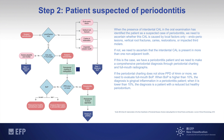If the periodontal charting does not show probing pocket depth of four millimeters or more, we need to evaluate the full mouth bleeding on probing. When the full mouth bleeding on probing is higher than 10%, the diagnosis is gingival inflammation in a periodontitis patient. When it is lower than 10%, the diagnosis is a patient with a reduced healthy periodontium.